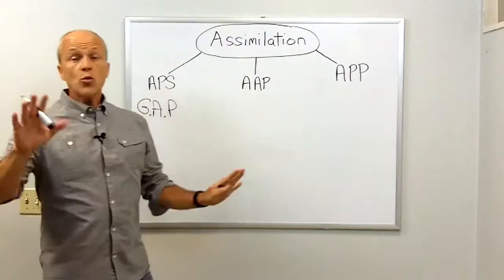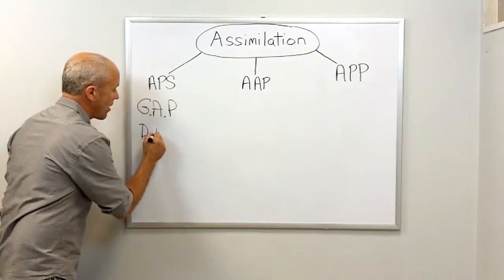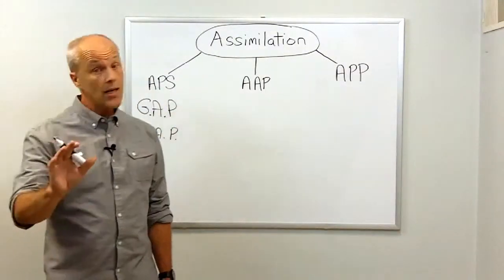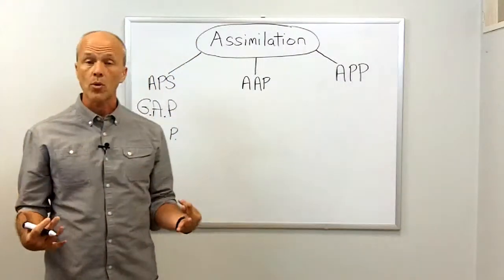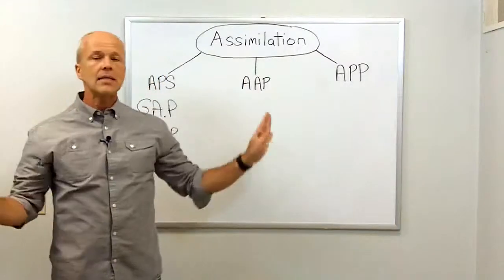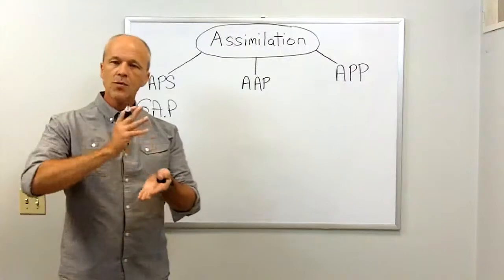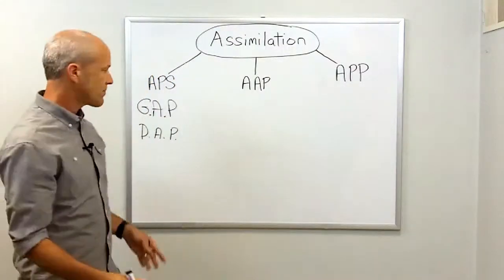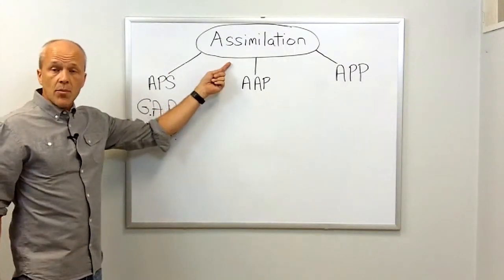The next thing I would say, once you get a process, is to document a process. This is also not technology necessarily, but it's getting down on paper with the key leaders at your church — not just big ideas about what we're going to do and generalities, but very specific things that we are going to do as a church and as church leadership to make efforts towards assimilation.